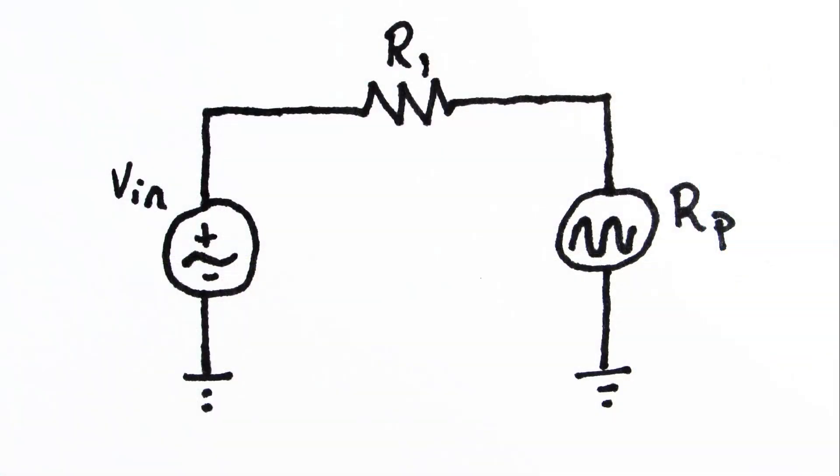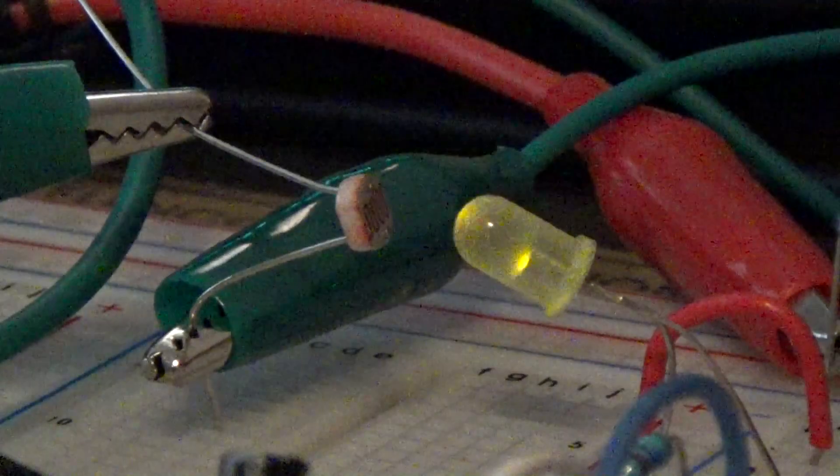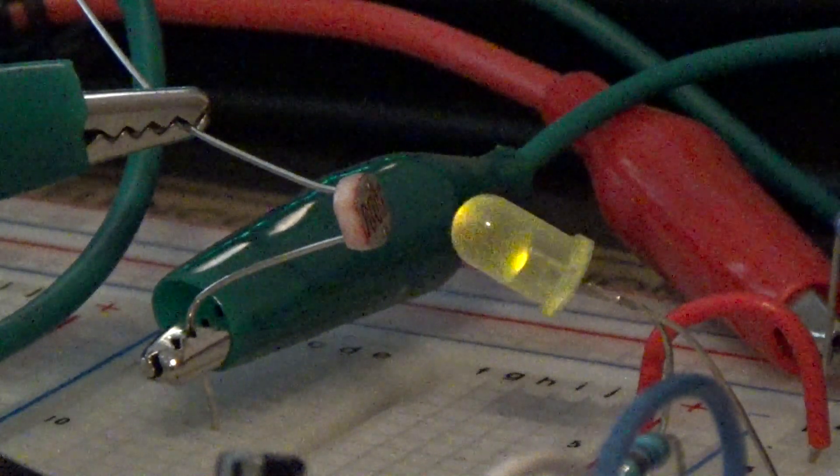One great way to vary our output amplitude is to use a photoresistor. Photoresistors change their resistance as a function of the amount of light that's on them. Their resistance drops as their exposure to light increases. LEDs are a great light source for this photoresistor.